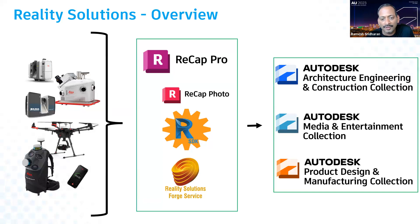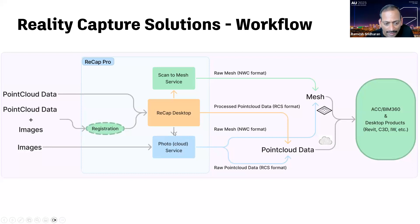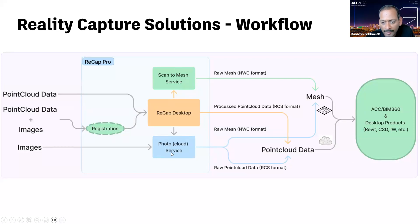If you ask what to do after double clicking, that's what we're covering today. This is what Recap Pro does: you bring in raw data like points or images, or both. We have several tools to create and register data. We also have a service to create a mesh either from point cloud or photos, automatically creating a 3D mesh. At the end of the day, it gives you a mesh and point clouds in a format you can take into ACC, Autodesk Construction Cloud, or desktop products like Revit or Civil 3D.